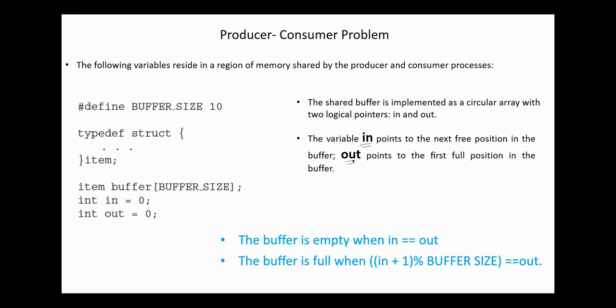Both these variables are initialized to zeros. The buffer is empty when in equals out, and the buffer is full when in plus one mod buffer size equals out. And these conditions will be used in the producer-consumer codes.